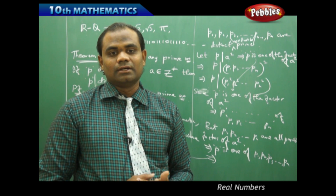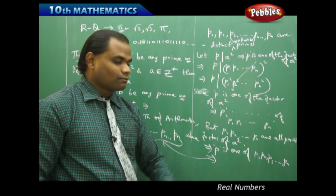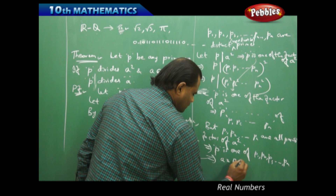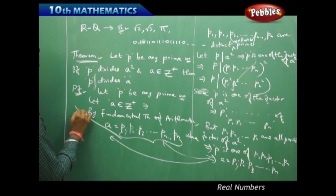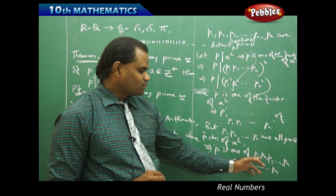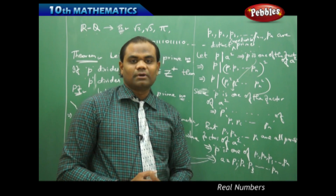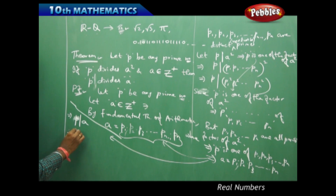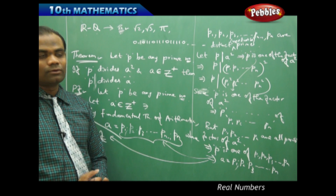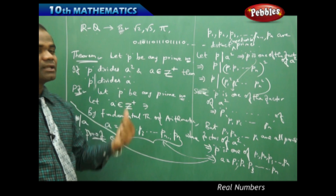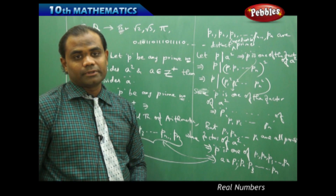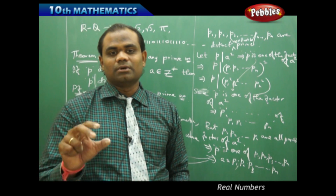Therefore P divides A. So A = P1 × P2 × ... × Pn, and since P is one of P1, P2, ..., Pn, it must lie somewhere in that product — therefore P divides A. This completes the proof. When we consider any prime number P such that P divides A² for any positive integer A, we can immediately conclude that P divides A. This is one of the most important theorems that helps us identify whether a number is rational or irrational.